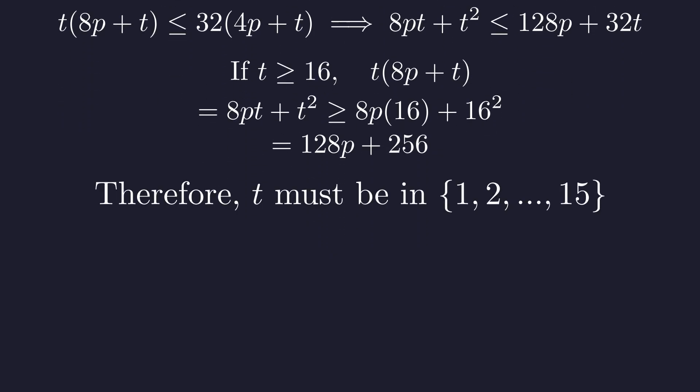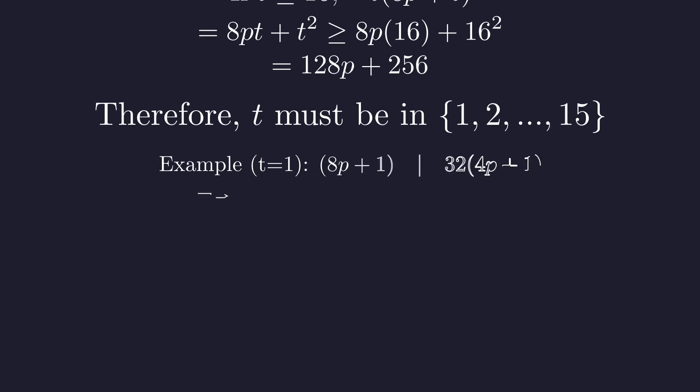So t can only be 1 through 15. You can check each case by hand and none of them work. Case 2 is impossible. Let me show you just one example to see how this works. When t equals 1, we need 8p plus 1 to divide 32 times 4p plus 1. With a bit of modular arithmetic, this reduces to saying 8p plus 1 must divide 28. But the only divisors of 28 are pretty small numbers and none of them give us a prime value for p.